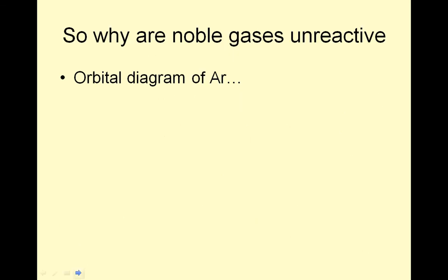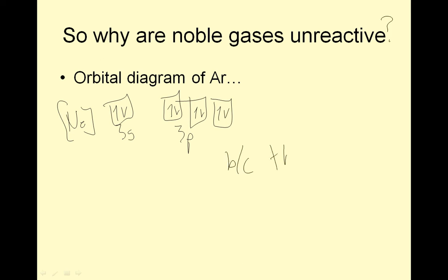That's why noble gases are unreactive. The orbital diagram of argon - I'll do the outer part. We'll say neon is the core, and then we'll say 3s and then 3p. And this will represent argon. Putting that box in there means look at all those guys in there: up, down, up, up, up, down, down, down. So why are noble gases unreactive? Because they are full, and that makes them lower energy.